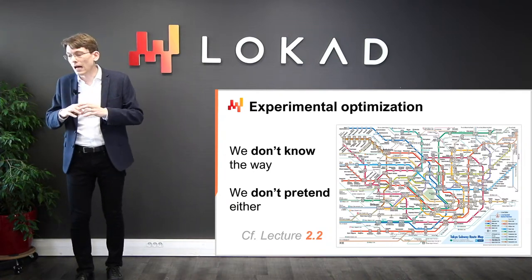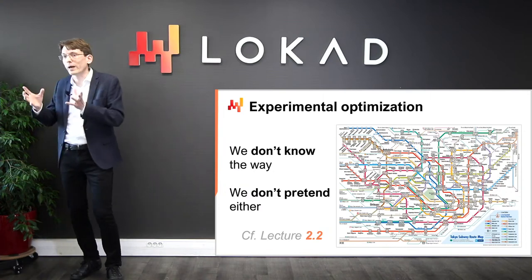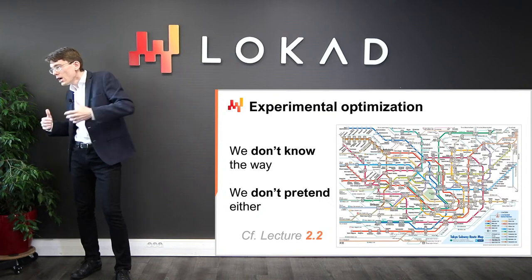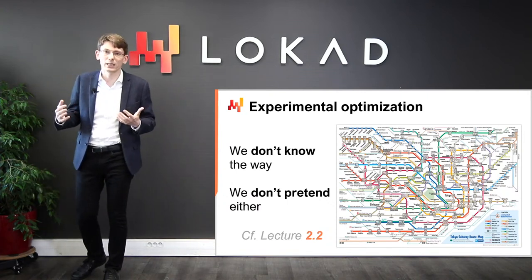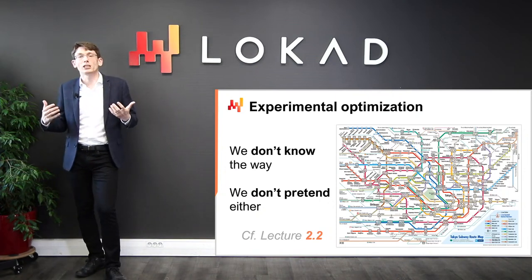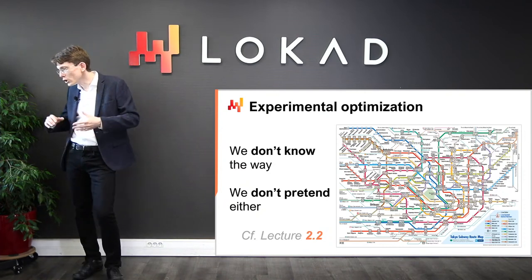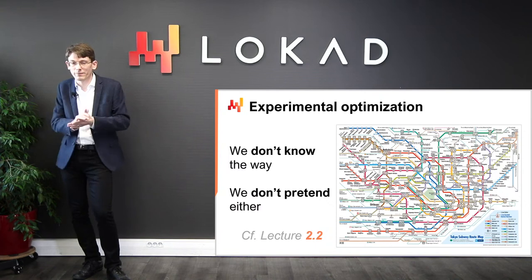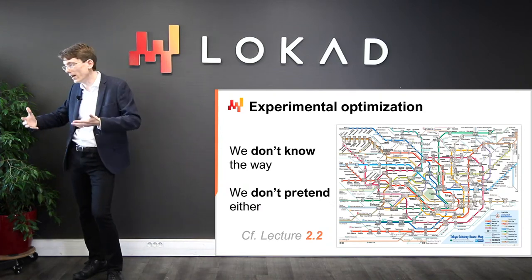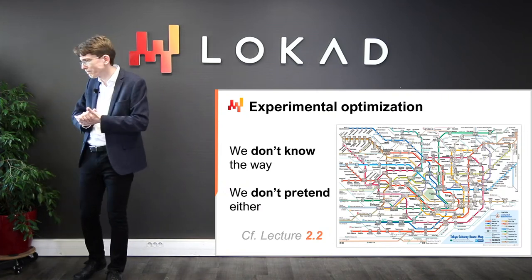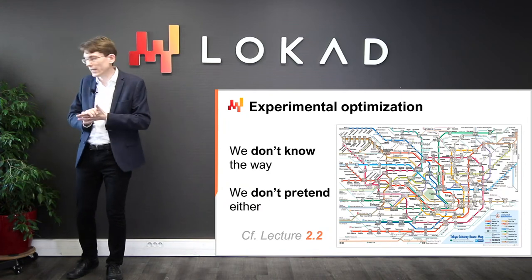This is not a matter of mathematical correctness but of adequacy: does this loss function, which is a mathematical construct, adequately reflect what I'm trying to optimize for my supply chain? We addressed this conundrum in lecture 2.2, titled Experimental Optimization. The experimental optimization perspective states that the problem is not a given — it must be discovered through repeated, iterated experiments. The proof of correctness of the loss function and its variables emerges not as a mathematical property but through a series of observations driven by well-chosen experiments obtained from the supply chain itself.